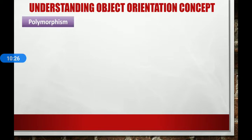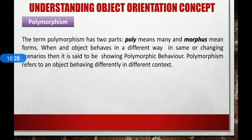Next is polymorphism. The term polymorphism has two parts: 'poly' means many and 'morphous' means forms. When an object behaves in different ways in the same or changing scenario, it is said to be showing polymorphic behavior. For example, a printer can print on various types and sizes of paper. Polymorphism refers to an object behaving differently in different contexts.